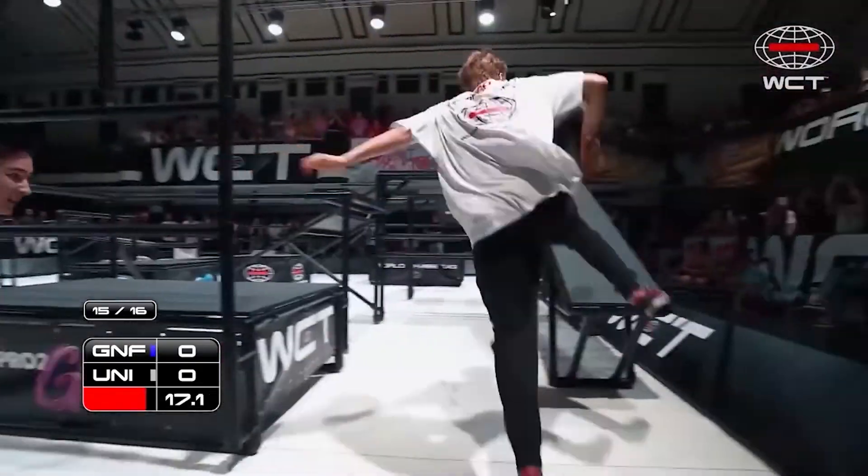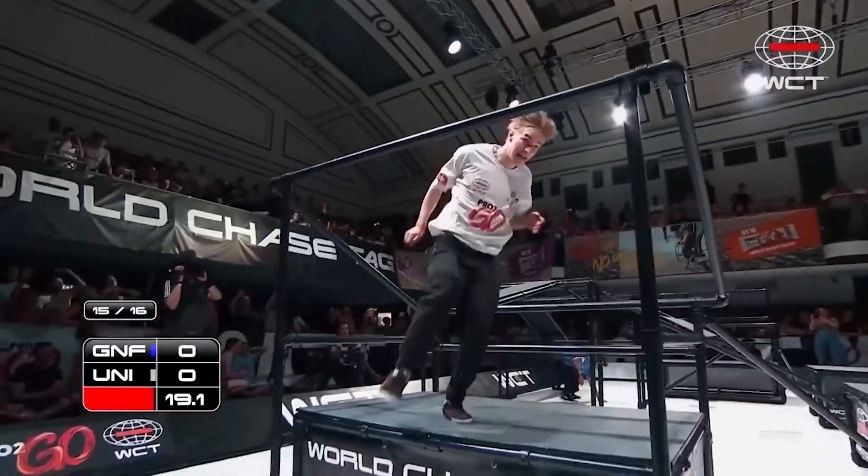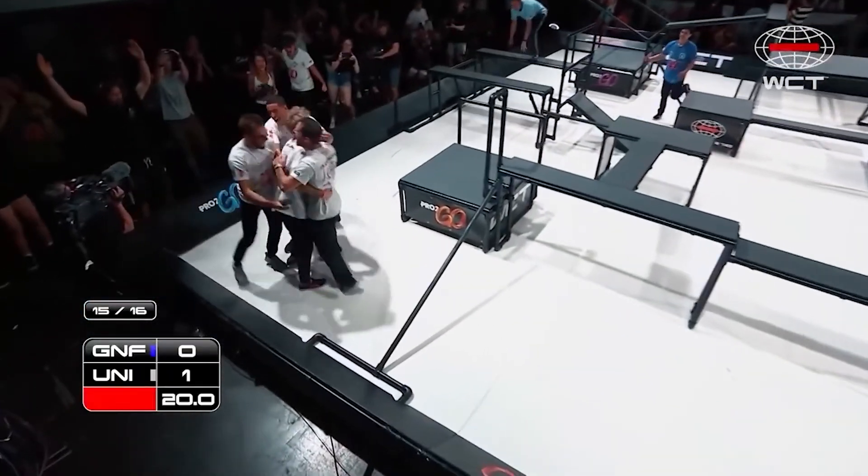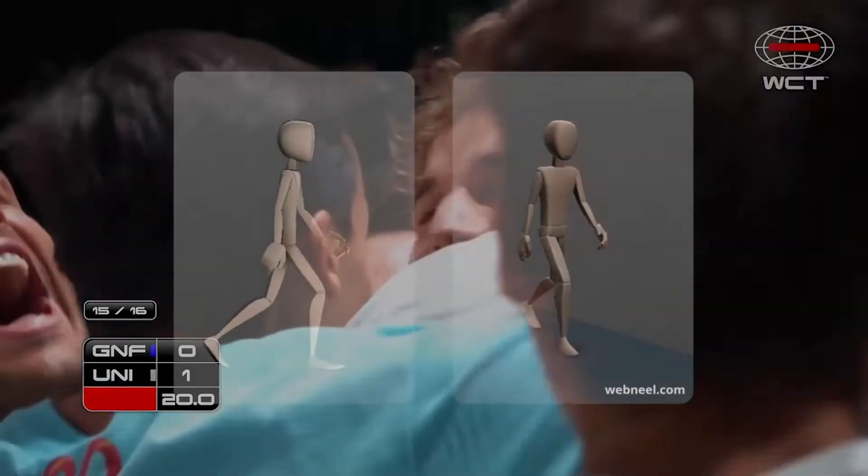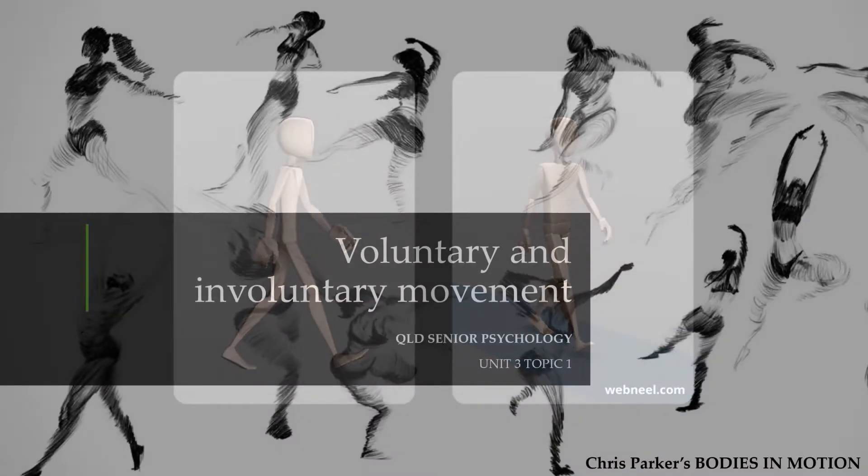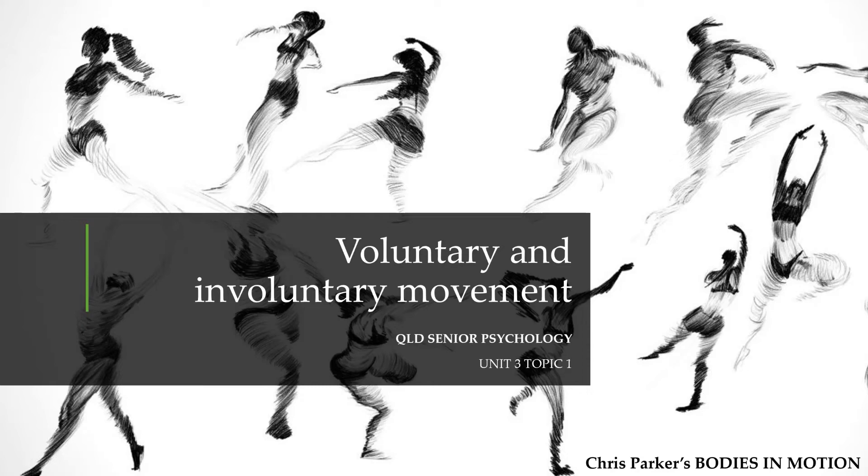The amount of coordination required for both the chaser and the evader is phenomenal, but the two honestly make it look so easy. But chasing aside, even simple walking is extraordinarily complex, as animators will tell you. Today we're going to look at how the brain coordinates movement, both voluntary and involuntary.